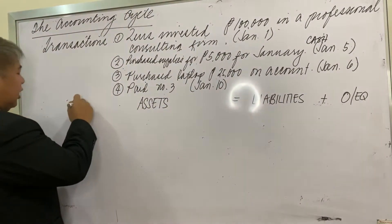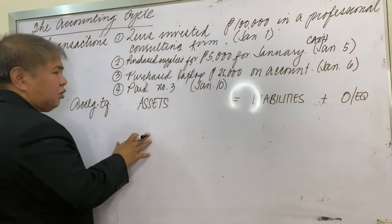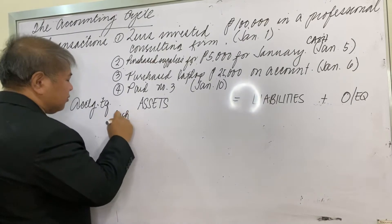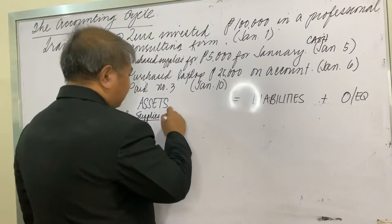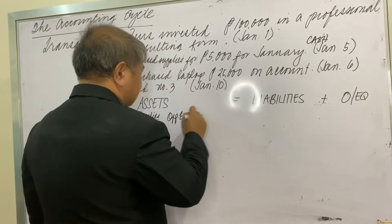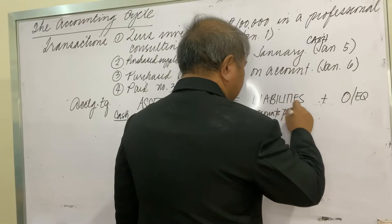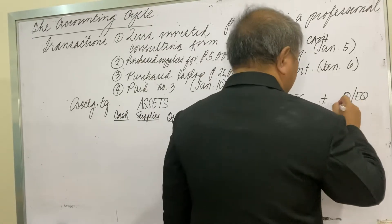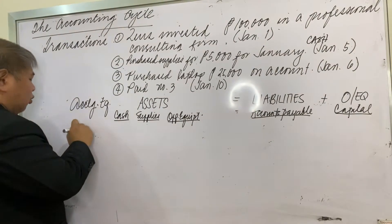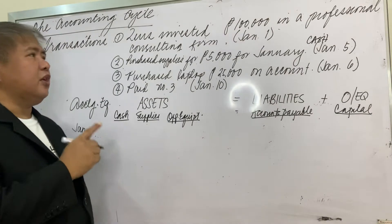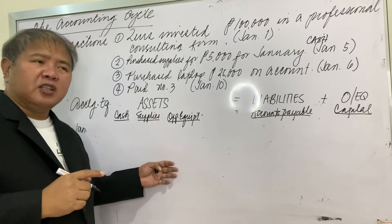Let's analyze these transactions using the accounting equation. Our assets include cash, supplies, and office equipment. On the other side we have accounts payable and capital. On January 1, the owner invested 100,000 pesos. The business received cash of 100,000 pesos, so assets increased — specifically, cash increased by 100,000 pesos.